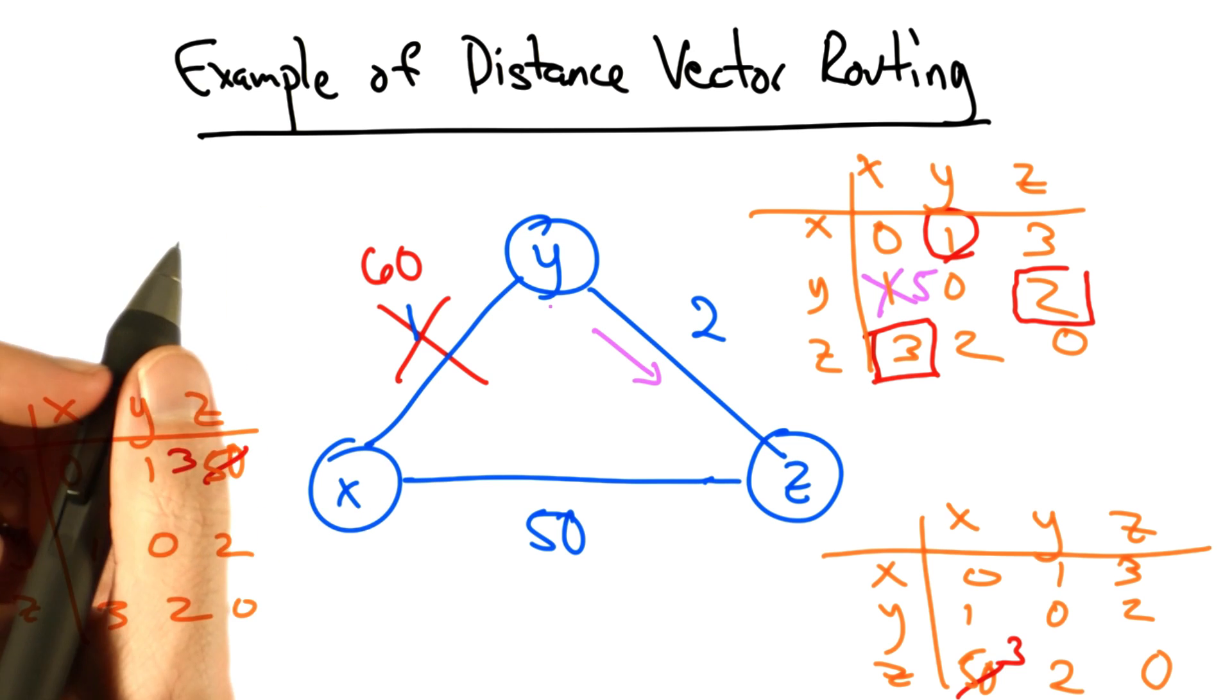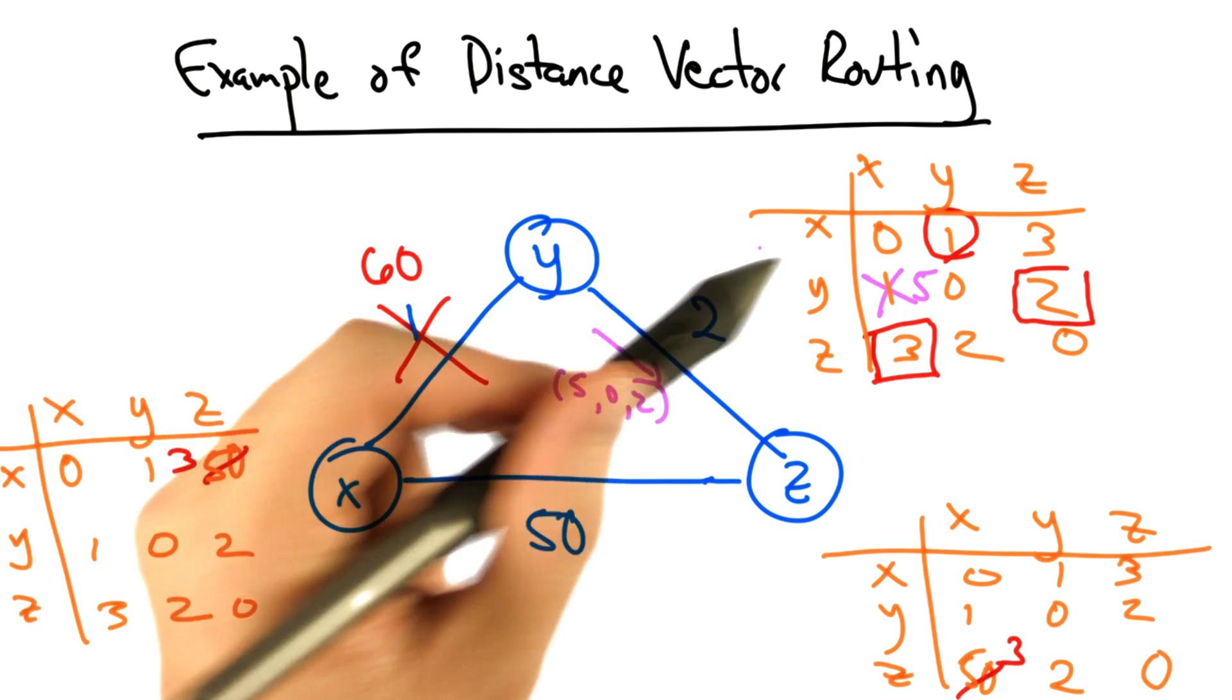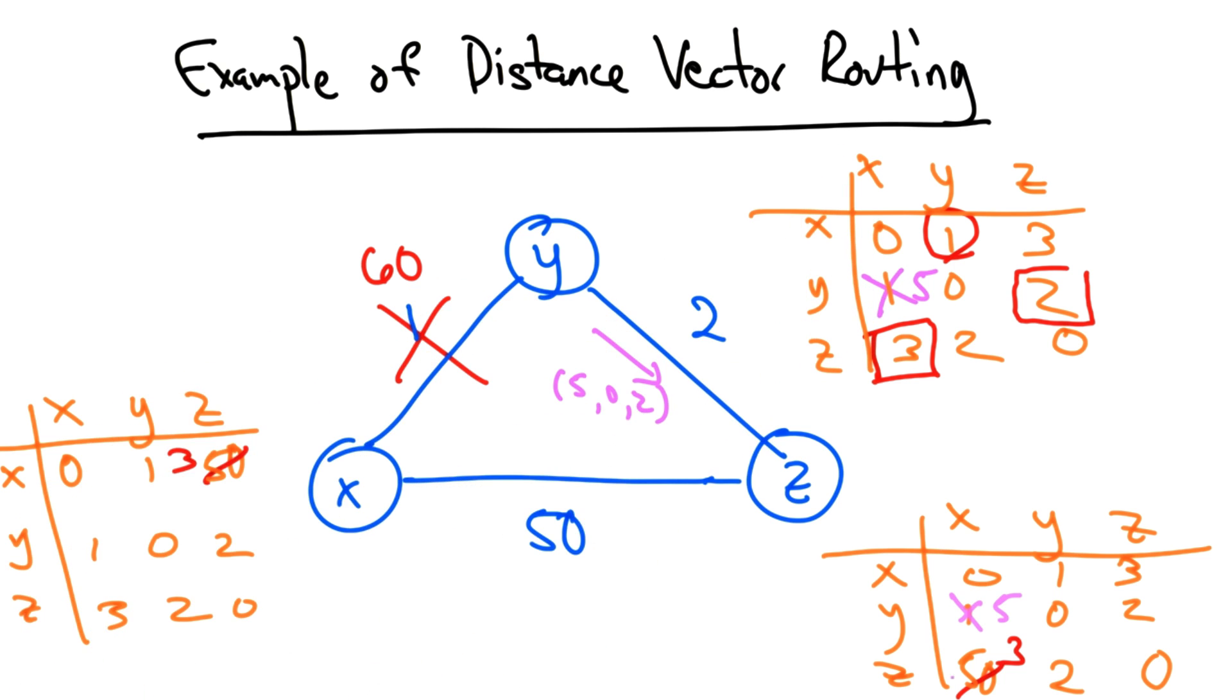Then it will tell its neighbor, z, its new distance vector. In other words, that now its distance to x is no longer 1, but 5.